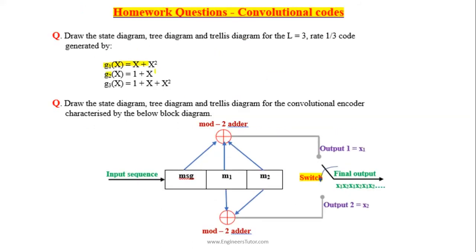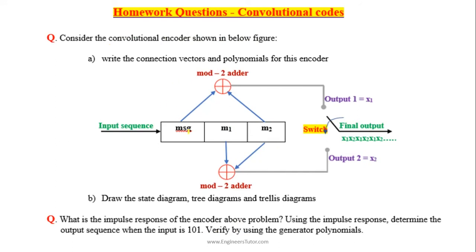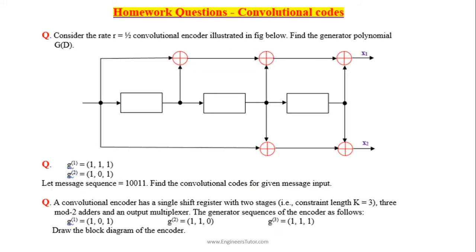Generator polynomials are given; draw the state diagram and trellis diagram. Similarly, find the state diagram and trellis diagram for this encoder. The convolutional encoder is given — find the generator polynomial g(D). Generator sequences are given; find the convolutional codes for the given message sequence.